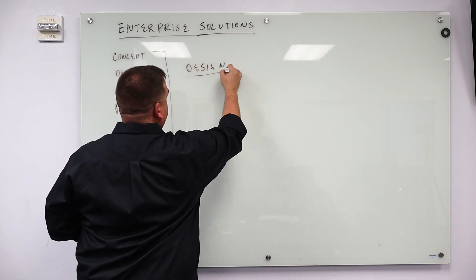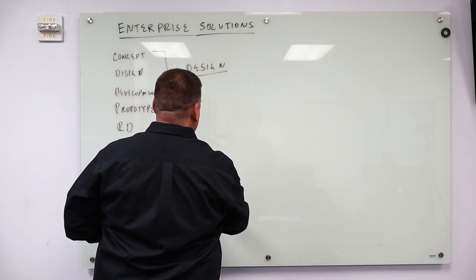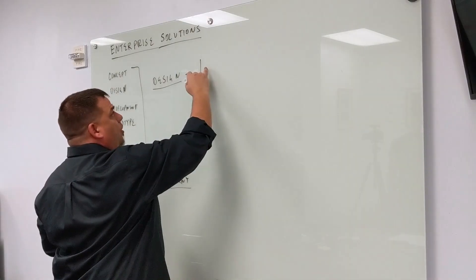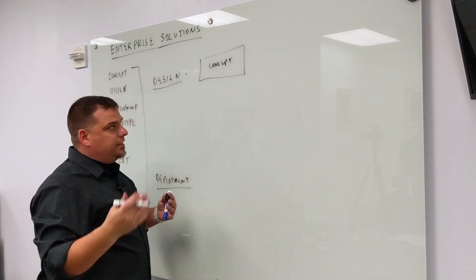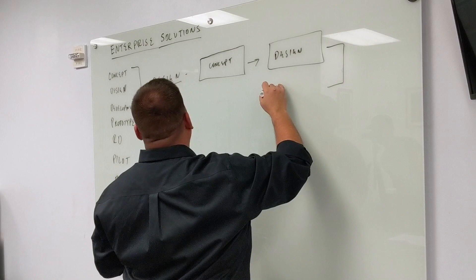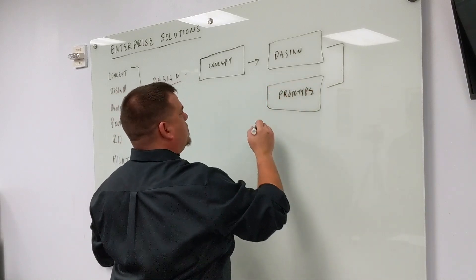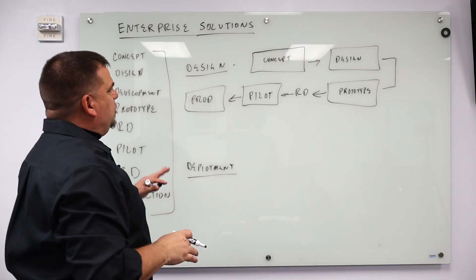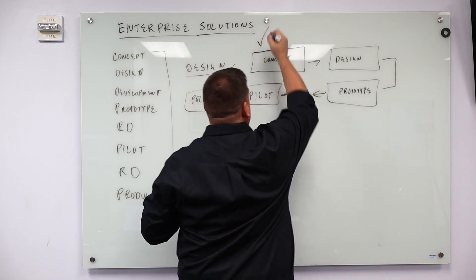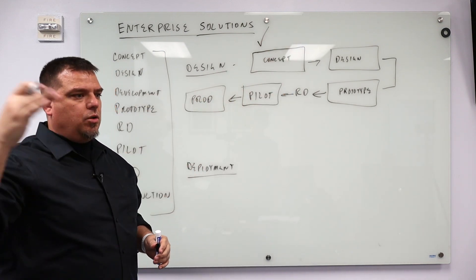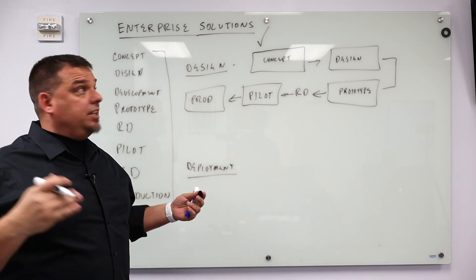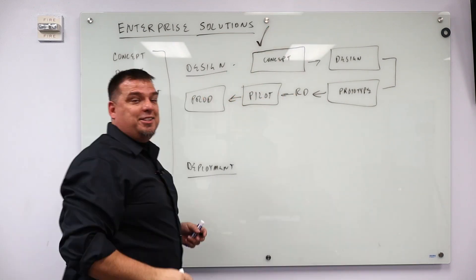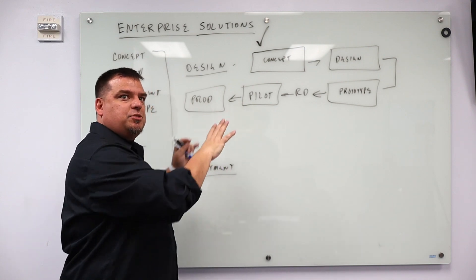There are basically two steps to developing an enterprise class system: the design step and the deployment step. When you design an enterprise class MES solution, you go through concept, design, prototype, redesign, pilot, and then production. During the design phase, you're only working on the checkbox stuff. Whether you're going to Ford, General Motors, Pepsi Cola, or Nucor Steel, when you first start developing the solution, you're only developing the checkbox requirements — because the people on the plant floor didn't have a say when it was designed, and that's going to be your challenge.